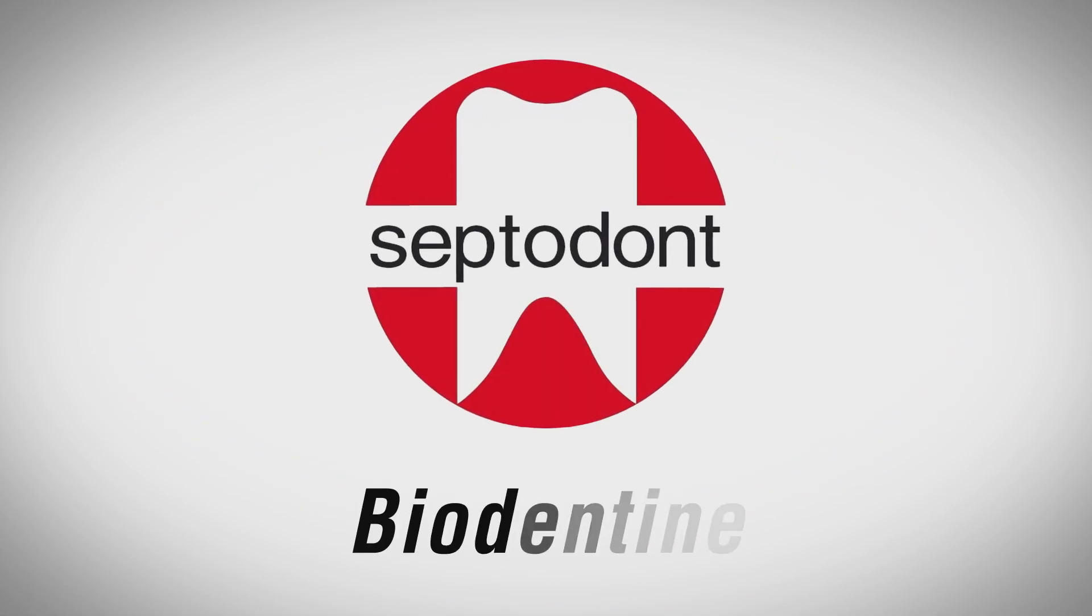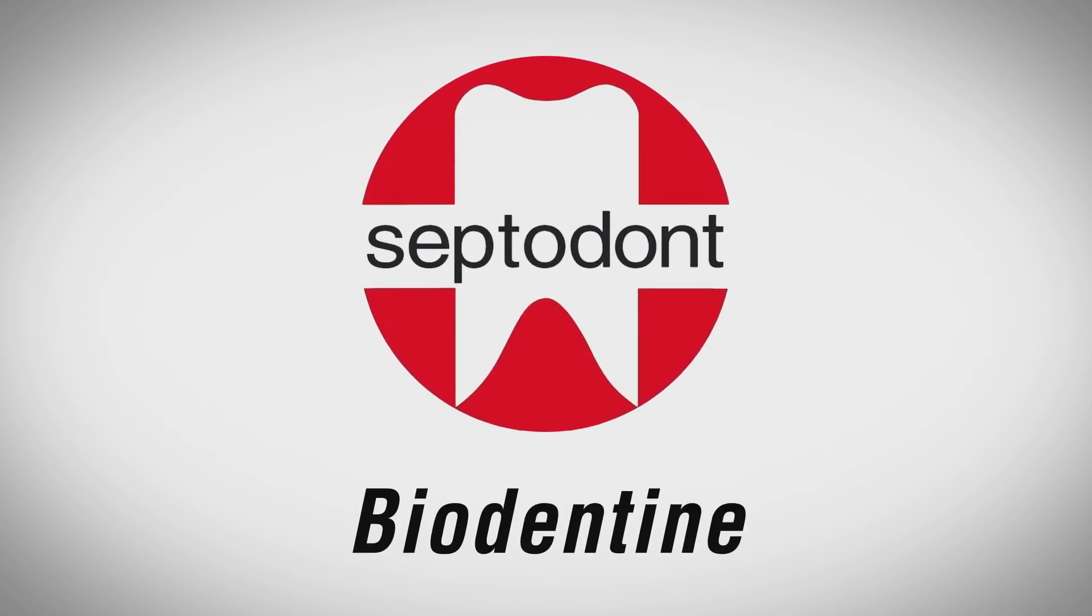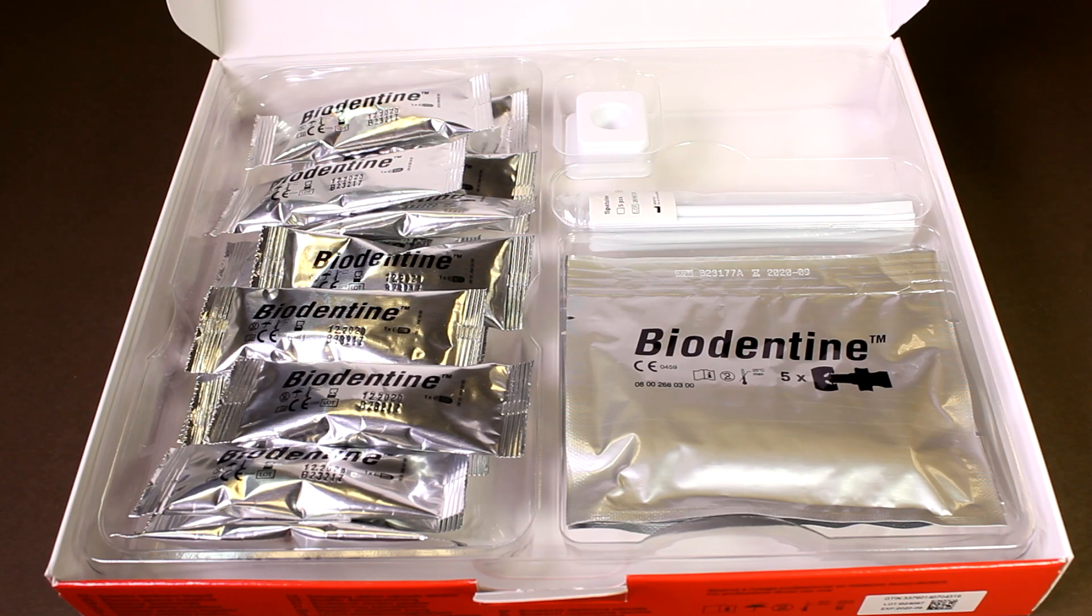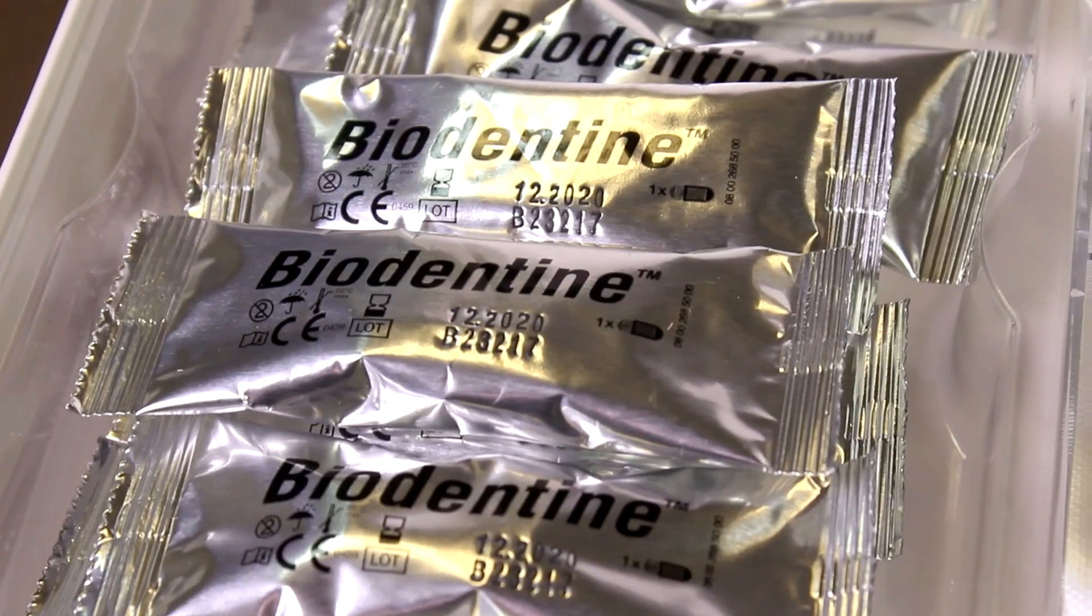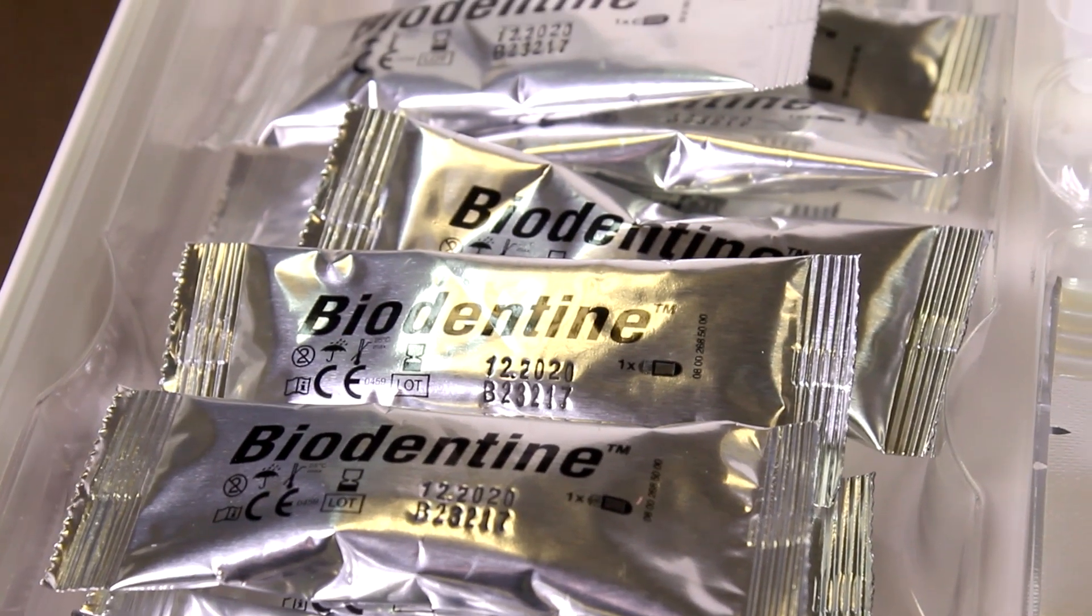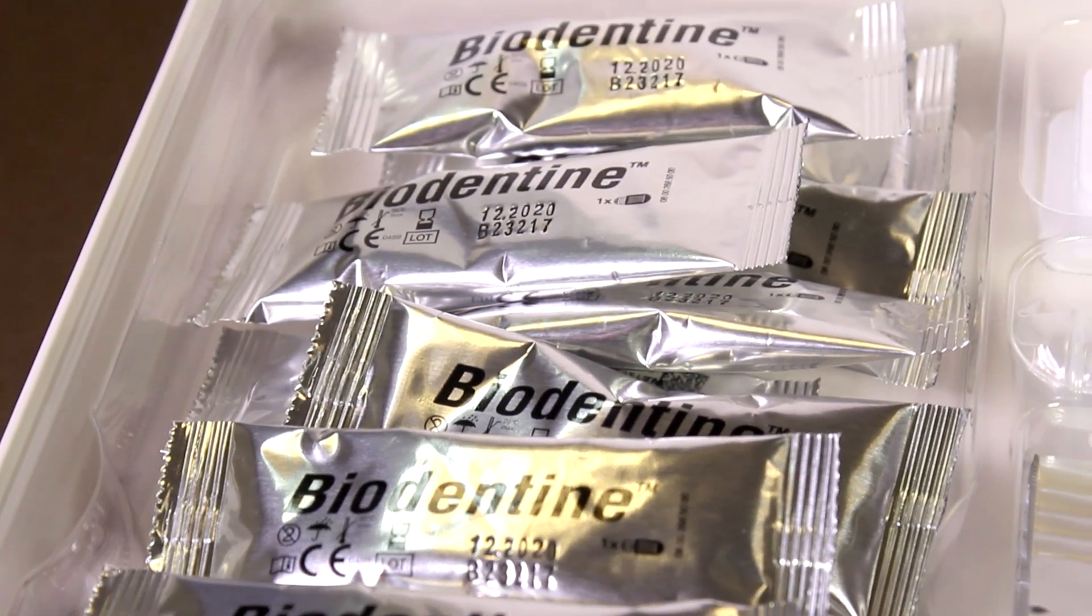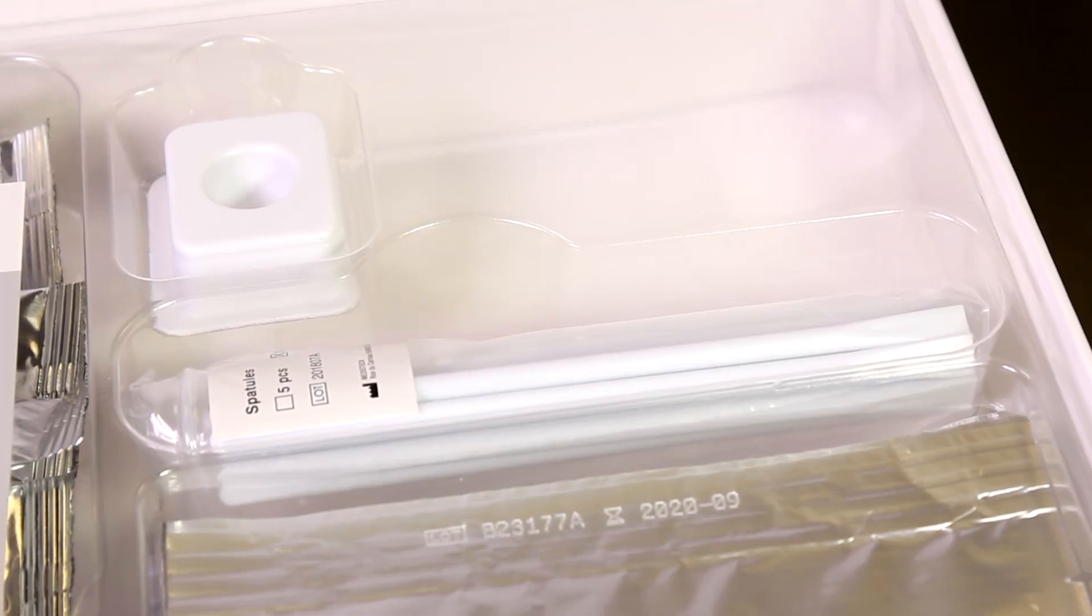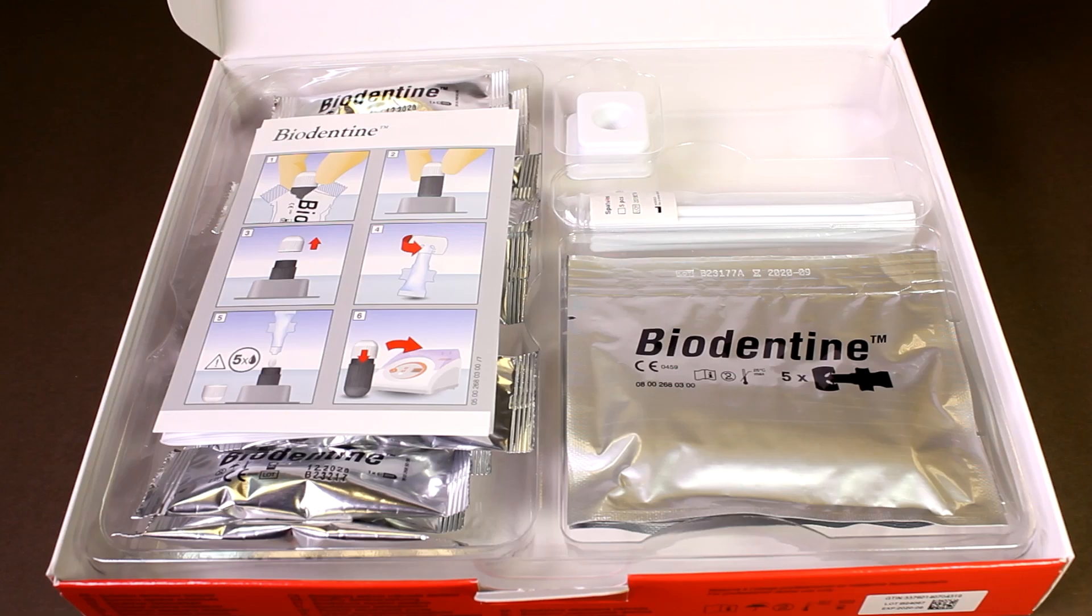Biodentine, brought to you by Septodont. Inside a box of Biodentine there are 15 capsules, each containing 0.7 grams of powder, 15 filled pipettes, a capsule stand, 15 spatulas and a laminated instruction leaflet.